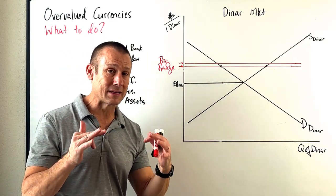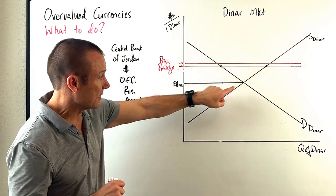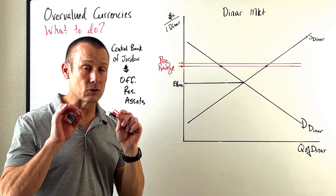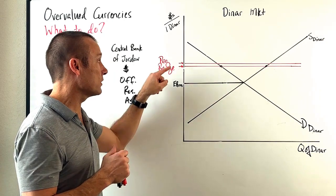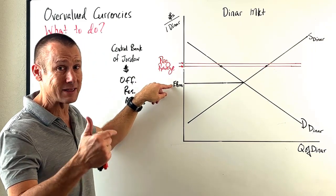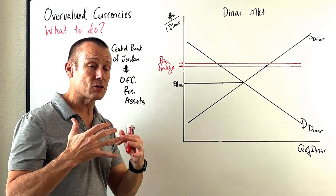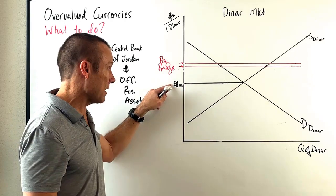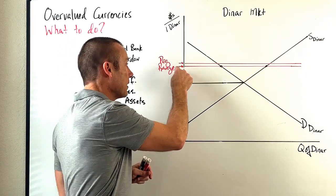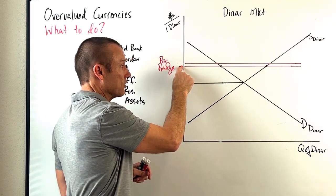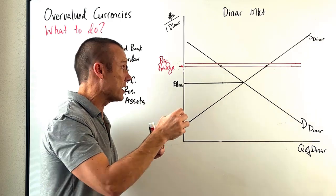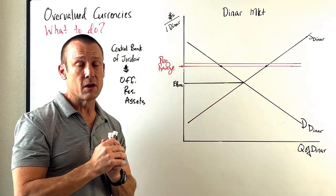Here's one thing where students can get confused. Some will look at this graph and see an intersection point below the range and say it's undervalued — no, it is overvalued. What we mean is that Jordan is overvaluing their currency; they're valuing it above what the market says the value should be. What is this currency actually going to get exchanged at? It's going to be exchanged at the lower end of this range — that's basically the official exchange rate. Hence they have overvalued their currency.